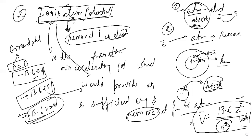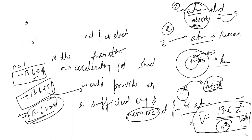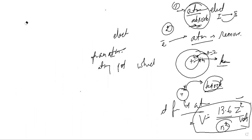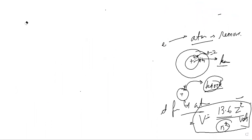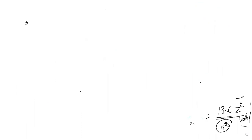Now the atom topic is complete. The numericals — such as finding radius, velocity of Bohr's stationary orbits — you can all do. At the end we will do the NCERT numericals, which are important from the exam point of view. Now we move to the second part, which is nucleus.